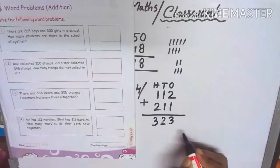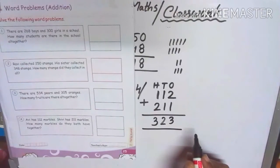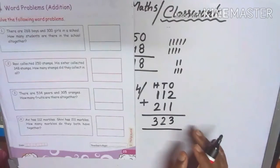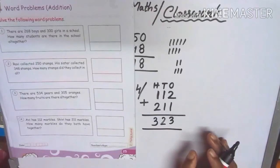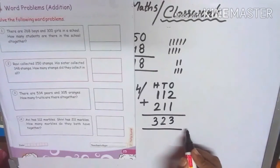So children, 323. How many marbles do they both have together? So your answer is total number of marbles 323. So children, practice whatever I taught you. Bye bye.